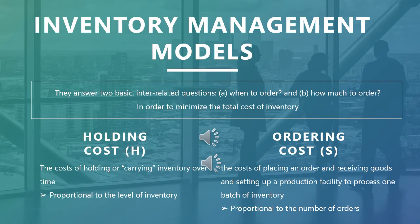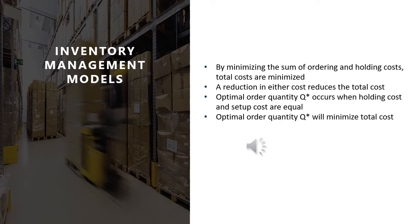Formally, the holding cost H is the cost per unit to hold or carry one unit of inventory for a whole year. The ordering cost S is defined as a cost per order — we pay this cost every time we place an order. The objective of any inventory management model is to minimize the total cost of inventory management, finding the ordering quantity that minimizes the combined cost of holding and ordering. Note that we are not including the cost of the items themselves.